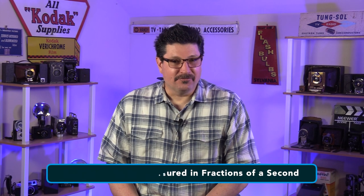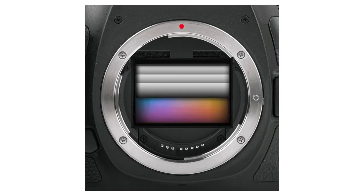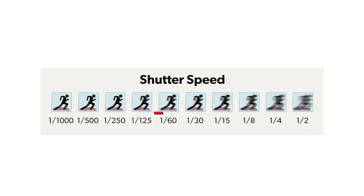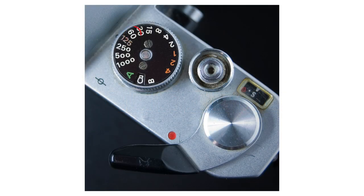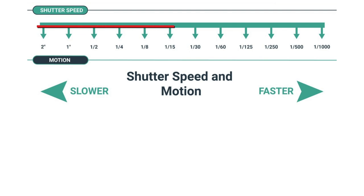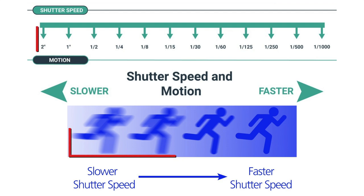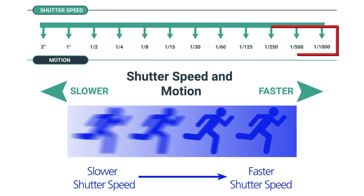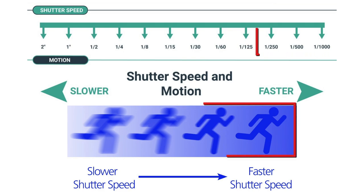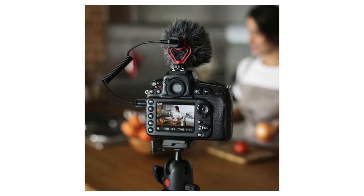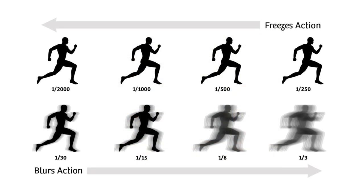Shutter speed is measured in fractions of a second. A 1/60th shutter speed means that the shutter exposed the film or the sensor for 1/60th of a second. Slower shutter speeds, like 1/30th or 1/15th, expose the film for longer stretches of time, allowing for more light but producing motion blur if the subject is moving. Faster shutter speeds, like 1/250th or 1/2000th of a second, allow less light but effectively freeze the motion. DSLRs that film video measure exposure time by shutter speed, even though video mode doesn't actually utilize the physical shutter to expose the frames.